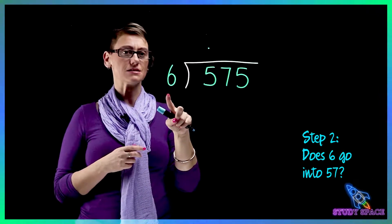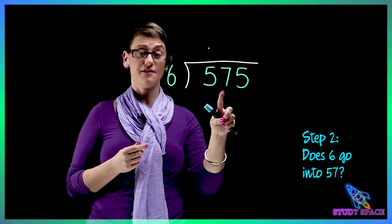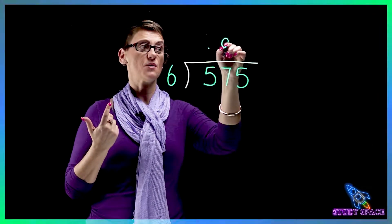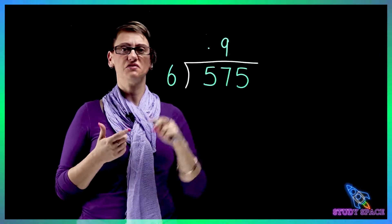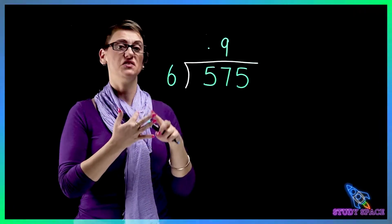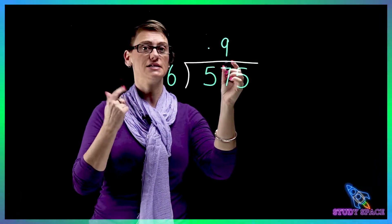So how many sixes are in 57? There's 9. But does it go evenly? 6 nines are 54. So no it doesn't. So 54, 55, 56, 57. So I've got 3 left over. So I need to carry those.